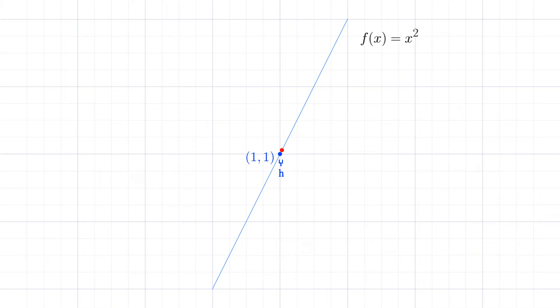So now we know what our second point is, we can find the slope with the slope formula. Slope is equal to rise over run, or vertical distance divided by horizontal distance.